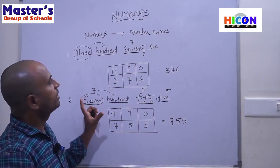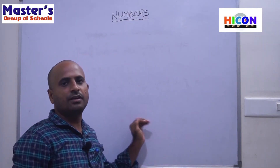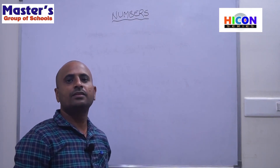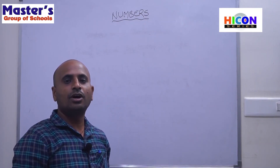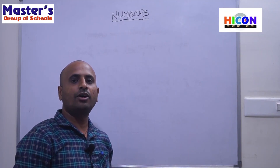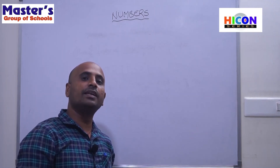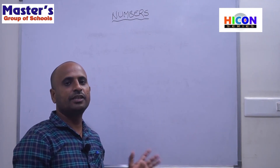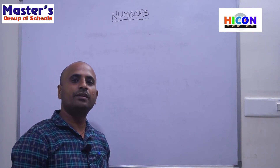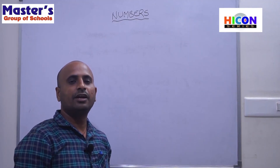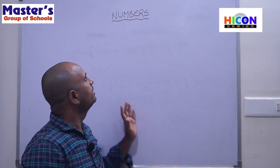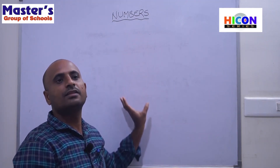So this part is also completed. In this class, that is in 3rd class, we will deal with four-digit numbers — how to write number names for four-digit numbers, how to write ascending order and descending order, how to write predecessor and successor, and how to compare numbers. These are the topics we will learn in this chapter, Numbers, in 3rd class.